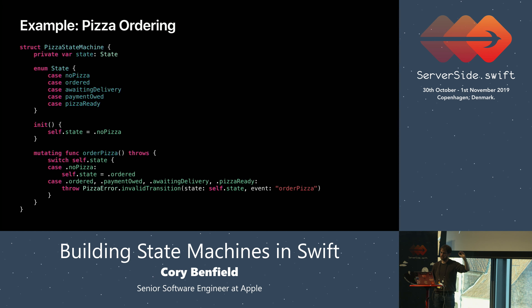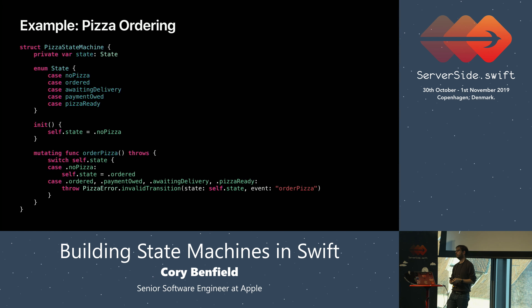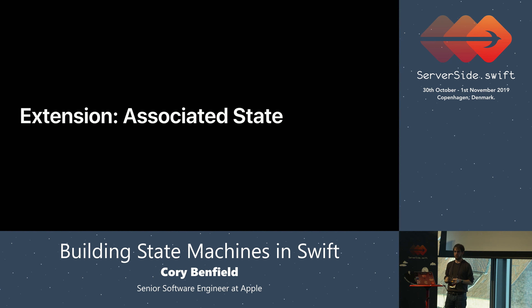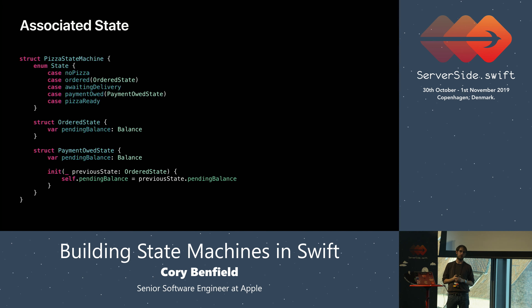Our state machine validates the user goes through the flow and notifies us if the user does something they are not allowed to. But our state machine can and should do more. Not all pizzas cost the same amount of money, so we probably want to keep track of how much the user actually owes. To do that, we need to introduce what I'm calling associated state — information the state machine also holds about the transaction. Storing extra state beside your state machine is not good; all state must be meaningfully part of your state machine.